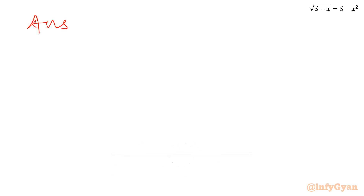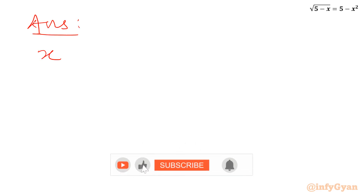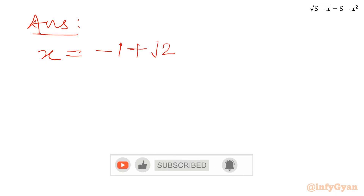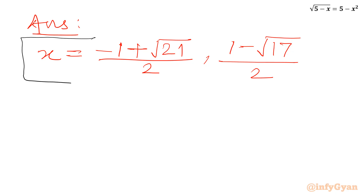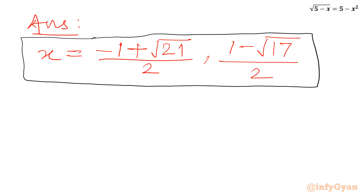So our final answer is x equals (minus 1 plus root 21) over 2 and x equals (1 minus root 17) over 2. I hope friends you will like this video. Thank you so very much for watching. Do not forget to like, share and subscribe. Bye-bye till next video. Good luck, take care of yourself.